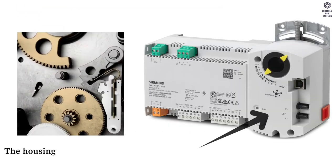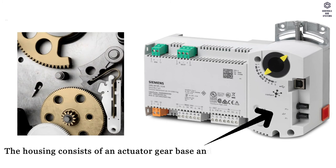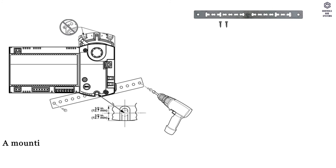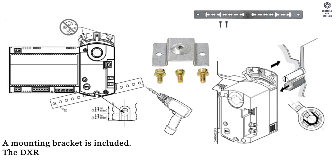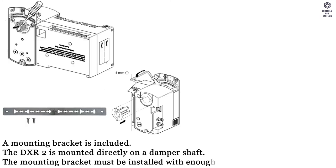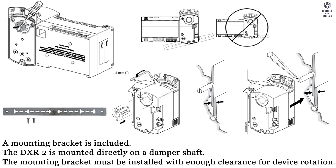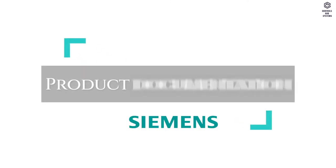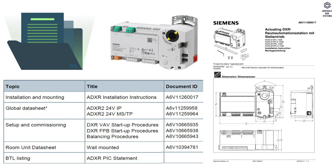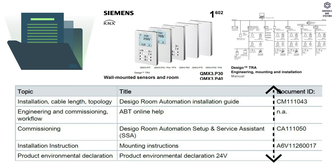Mounting: the housing consists of an actuator gear base and the device housing, which accommodates the main circuit board. A mounting bracket is included. The DXR2 is mounted directly on a damper shaft; the mounting bracket must be installed with enough clearance for device rotation. Documentation: the product documentation table indicates the related topic, title, and document ID for this DXR2.M10 series automation station device.